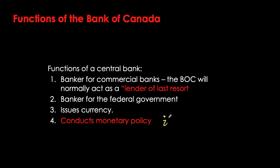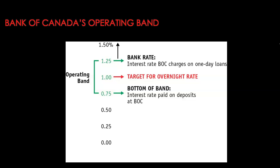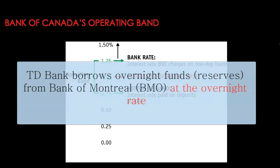Monetary policy is primarily conducted through manipulation of interest rates. The interest rate that the Bank of Canada targets is called the overnight interest rate. This is the shortest interest rate in our economy and is therefore referred to as the benchmark interest rate. When the Bank of Canada announces its target for the overnight rate, it essentially announces an operating band. The overnight interest rate is the rate at which financial institutions borrow funds from each other.